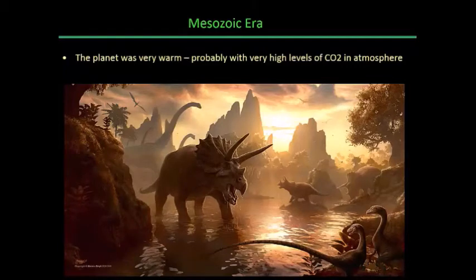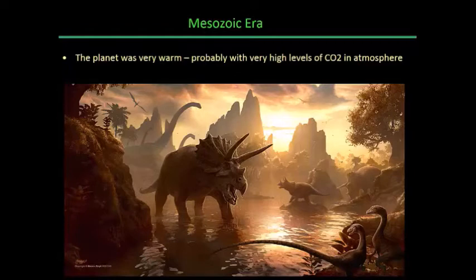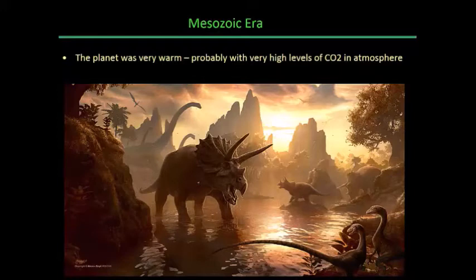During the Mesozoic, the Earth was very warm. There was no ice on the planet — or at least we can't detect it from the rock record. We think sea levels were very high. It was a very lush, warm, wet landscape on much of the Earth's surface, allowing a lot of ecosystems to thrive. All that plant growth in tropical ecosystems all over the planet — even at latitudes that are now very cold — supported a lot of herbivores, and all those herbivores supported a lot of carnivores.